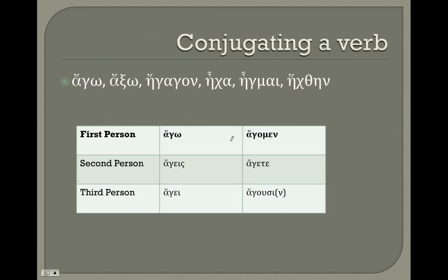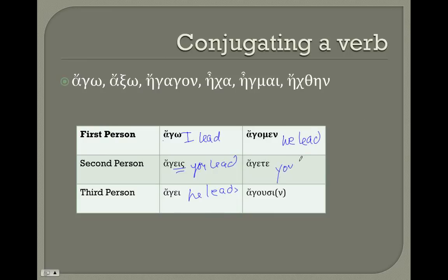Let's take a look at one other verb: 'ago', to lead. For the third person singular, 'he leads', 'she leads', or 'it leads' — 'agei'. 'Agomen' means 'we lead'. 'Agete' means 'you all lead'. And 'agousin' means 'they lead'.